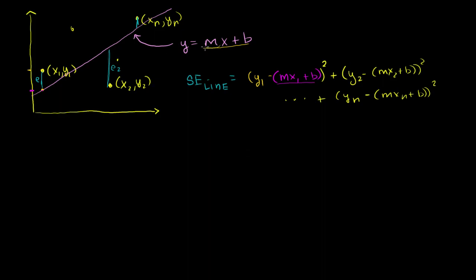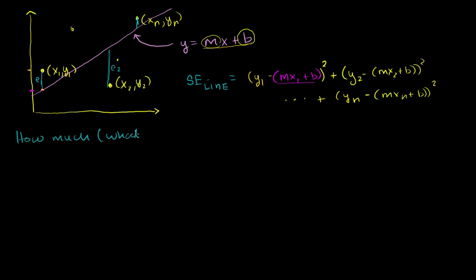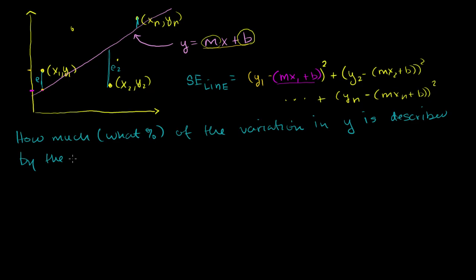Now that we actually know how to find these m's and b's — I showed you the formula, and in fact we've proved the formula of how to find these m's and b's — we can find this line, and if we wanted to say how much error there is, we can calculate it. Now what I want to do is come up with a more meaningful estimate of how good this line is fitting the data points. To do that, we're going to ask ourselves: what percentage of the variation in y is described by the variation in x?